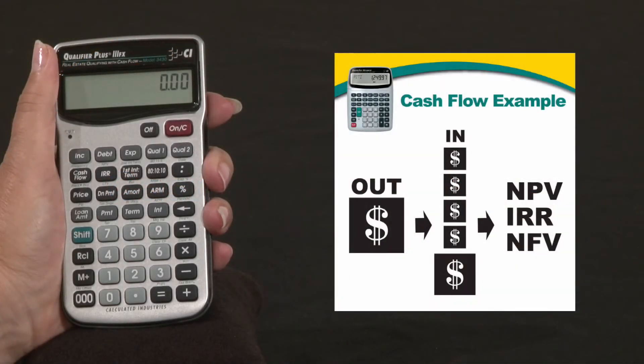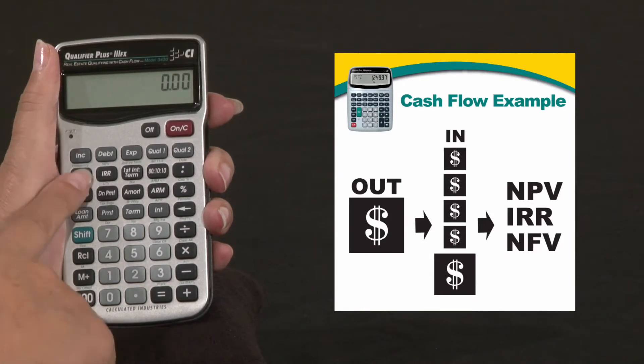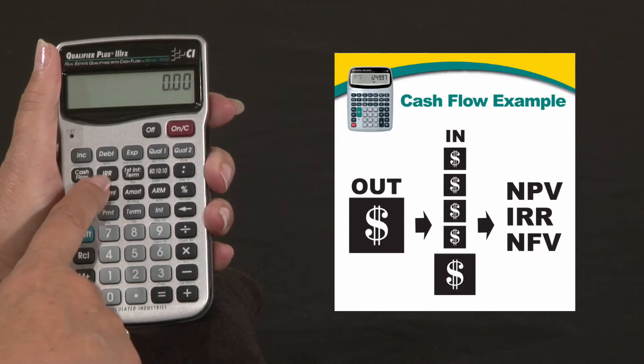Cash flow function is a great feature on the Qualifier Plus 3 FX and desktop. You can enter your cash flow and then you can solve for your internal rate of return.